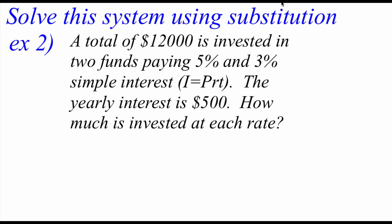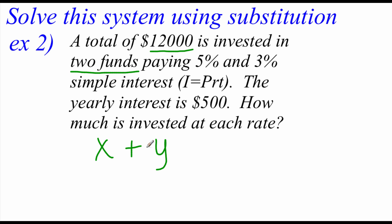The next example is an application problem and we're going to solve it using substitution. A total of $12,000 is invested in two funds. The first fund pays 5% and the second pays 3%. We're going to use simple interest: interest equals principal times rate times time. After one year we get $500 in interest, and we want to figure out how much is invested at each rate. We'll call the first fund x and the second fund y. Our total investment gives us the first equation: x plus y equals $12,000.